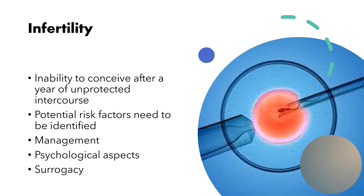Specific to women, we look at their age, PCOS, chronic medical conditions, hormonal imbalance, and gamete transport or implantation interference. Specific to men, we look at sperm viability, whether they had cryptorchidism, whether there is too much heat to the scrotum, whether they had mumps after puberty, STIs, etc., or interference with sperm deposition.